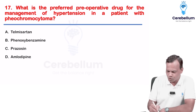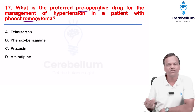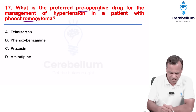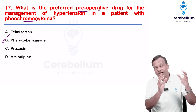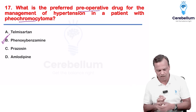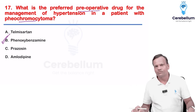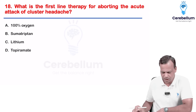Which drug is used for pre-operative management of pheochromocytoma? The answer is phenoxybenzamine — a non-selective, irreversible alpha-1 plus alpha-2 blocker, and the drug of choice for pheochromocytoma.